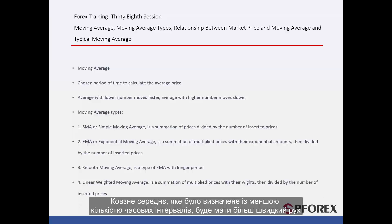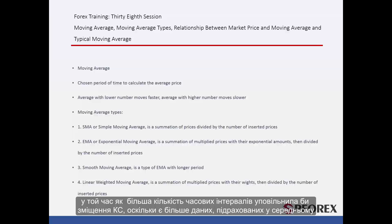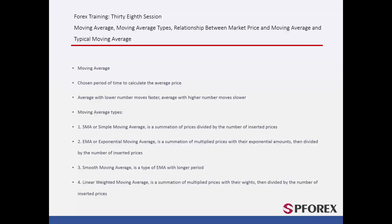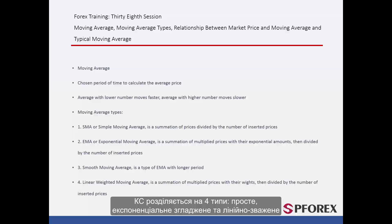A Moving Average determined with a lower number of timeframes would have faster movement, while more timeframes would slow down MA displacement since there is more data calculated in the average. MA is classified into four types: Simple, Exponential, Smooth, and Linear Weighted Moving Average.